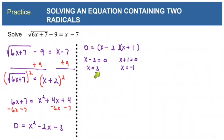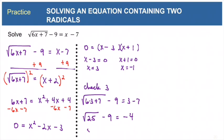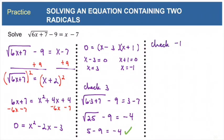Checking x equals 3: square root of 6 times 3 plus 7 minus 9 equals 3 minus 7. Under the radical, 6 times 3 is 18, and 18 plus 7 is 25. So I have square root of 25 minus 9. On the right side, 3 minus 7 is negative 4. Square root of 25 is 5, so I have 5 minus 9 equals negative 4, and we know that's true. So 3 is a good solution.